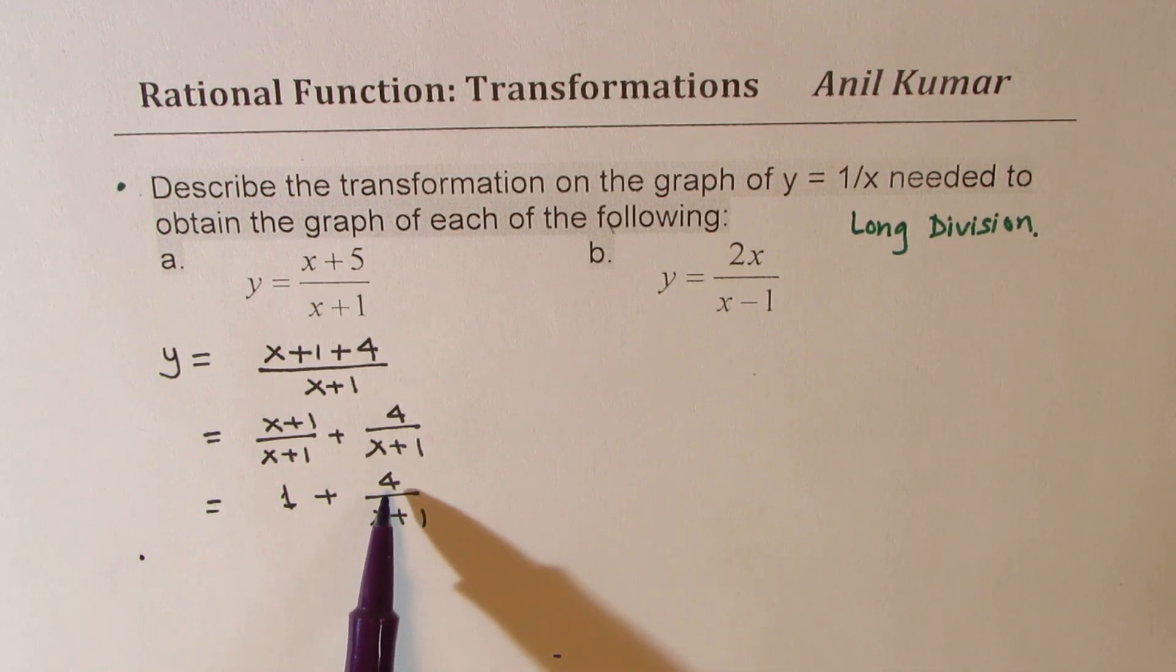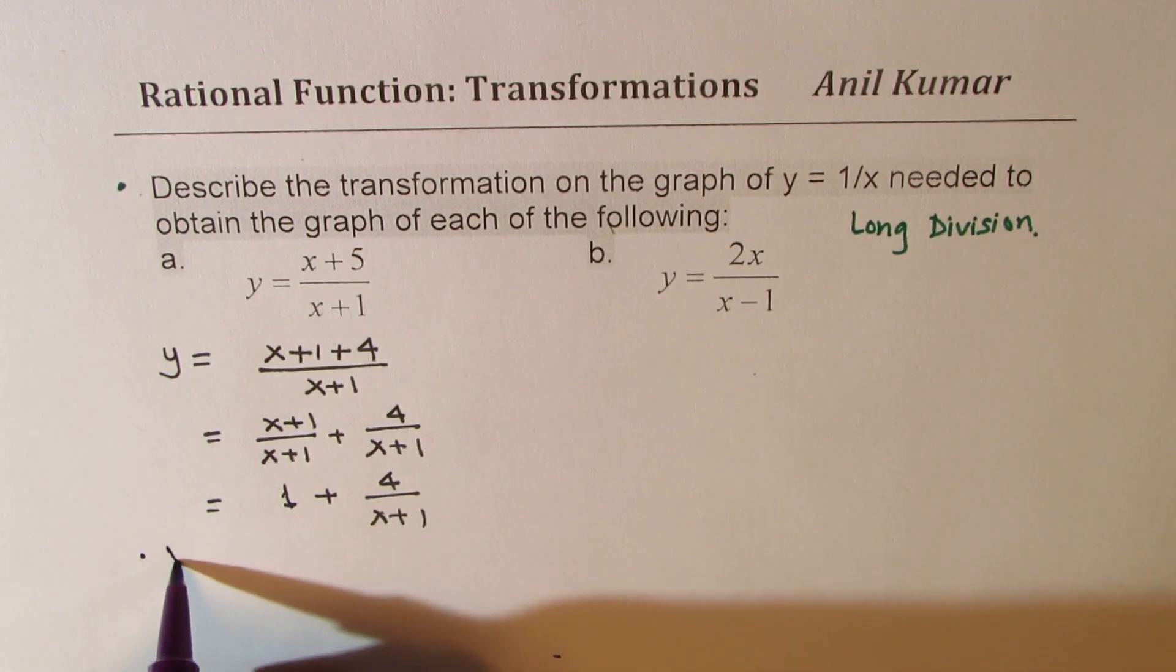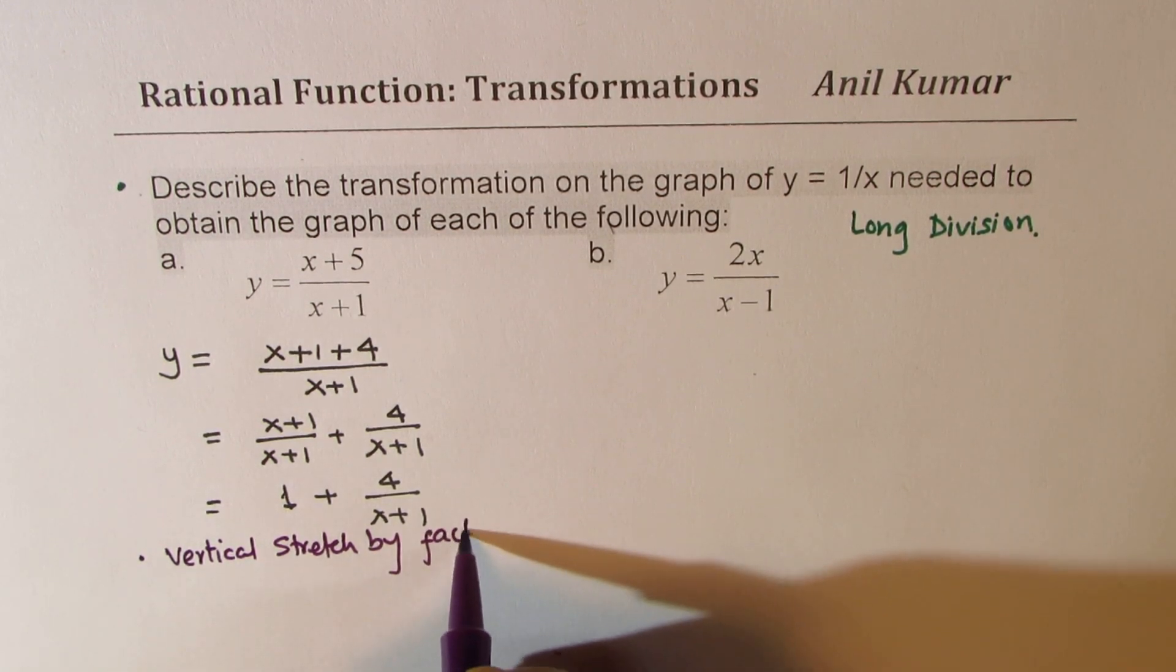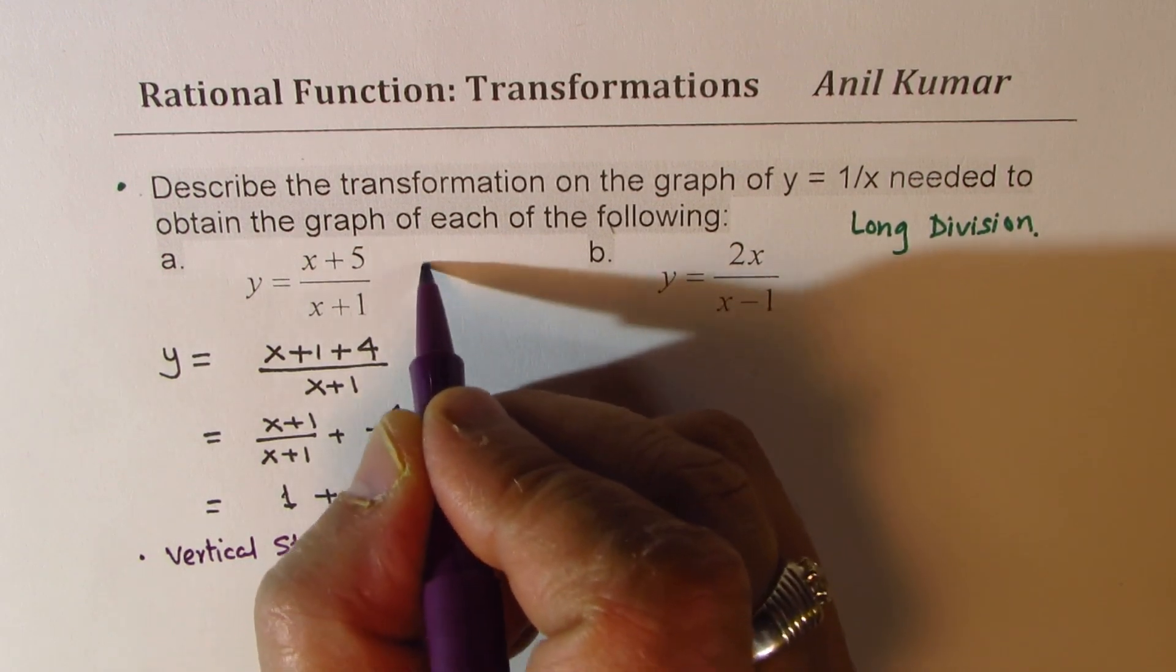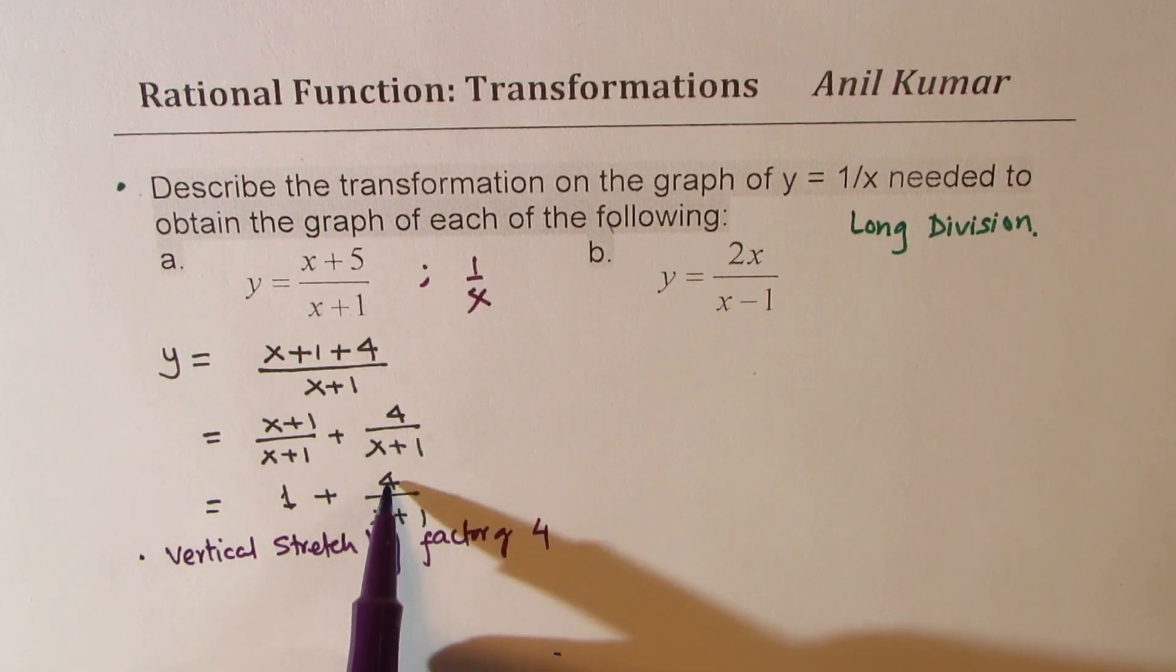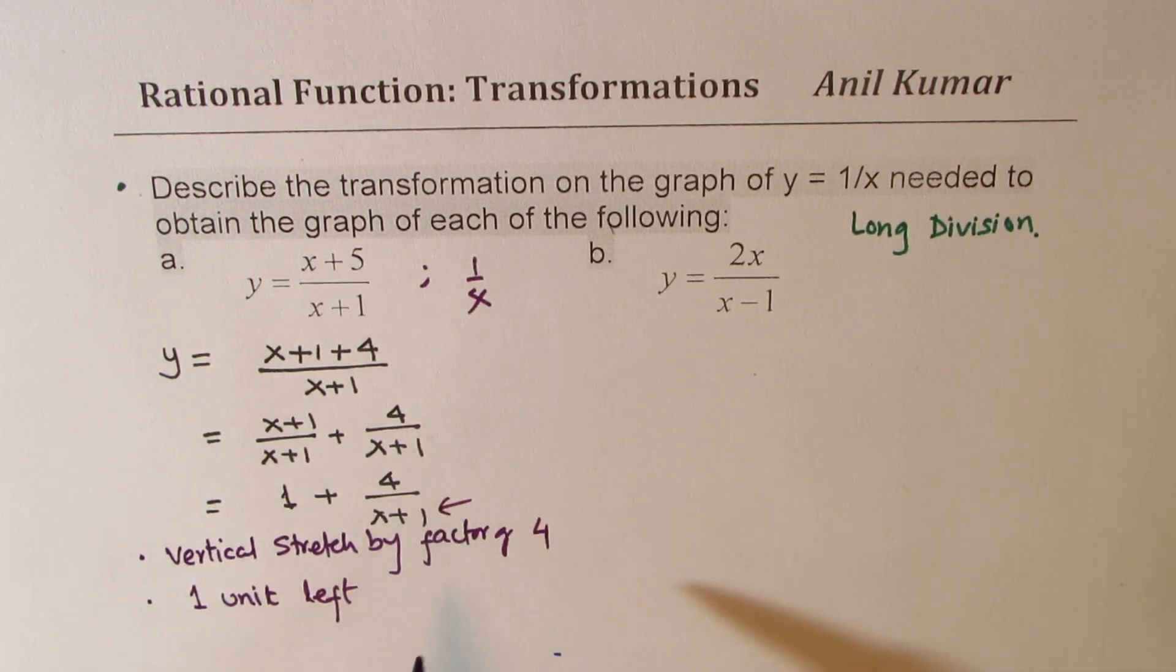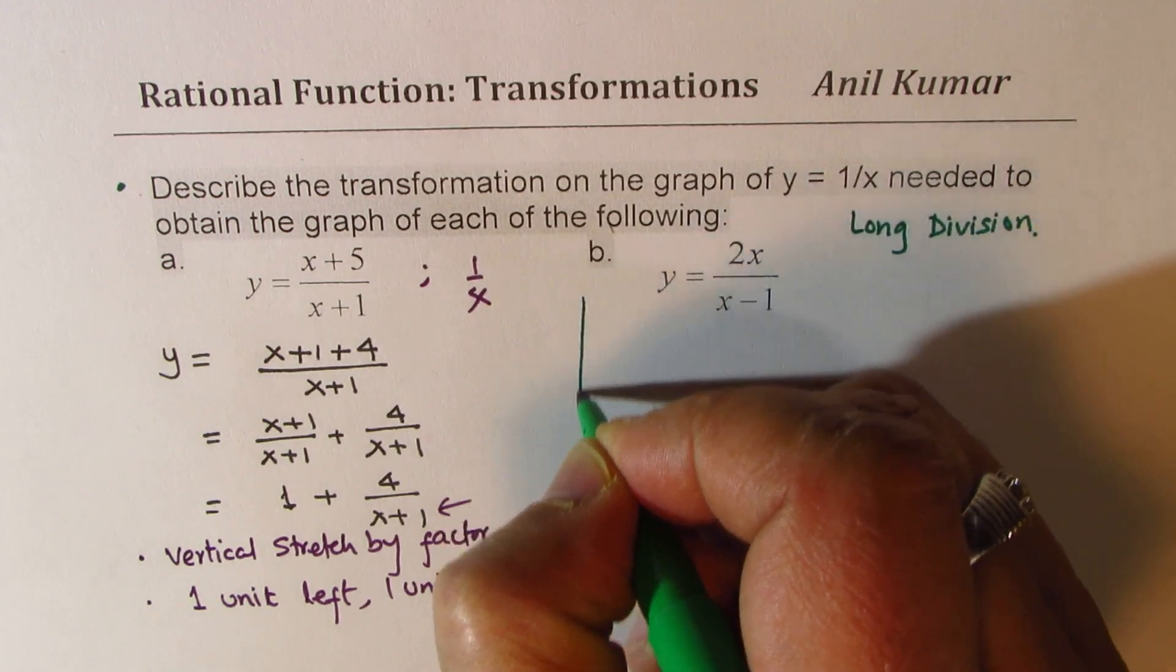So what we have here is vertical stretch by 4. We could write vertical stretch by factor of 4. We are comparing with 1 over x. So vertically stretched by a factor of 4 and then we have a translation. So 1 unit left, this is because of the denominator part, and 1 unit up. So that is how you could actually describe the transformation. I hope you understand and appreciate these steps.